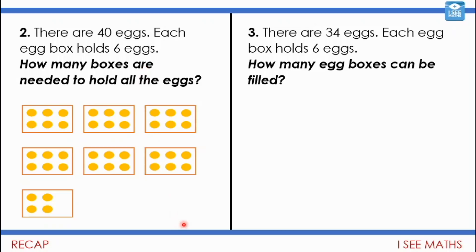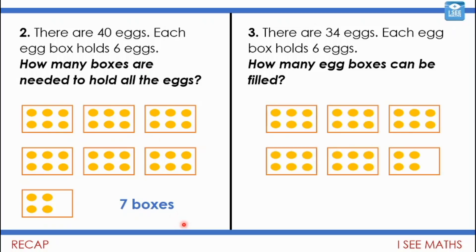The example on the right, each egg box holds 6 eggs. So we need 6 egg boxes to hold all the eggs. So how many egg boxes can be filled? Well the answer is 5 boxes. So have a look at that. The difference in the number of eggs is just 6 eggs. And yet the answer is a difference of 2 boxes. Of course it depends on the amount that we have. But also, is it that we're looking for how many boxes are needed to hold all the eggs? Or is it how many boxes can be filled?